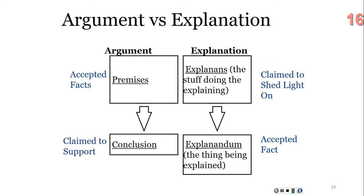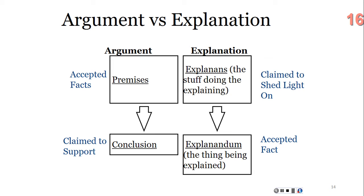With an argument you have premises that are typically accepted as fact, and the premises are claimed to support a conclusion which is not typically accepted as fact. With an explanation you have the explanans — the stuff doing the explaining — and that's claimed to shed light on an accepted fact, the explanandum, the thing being explained. An argument answers the question "why believe this?" An explanation answers the question "how does this happen? Why is this the case?" With an argument, the conclusion is typically not already accepted as fact, but the premises meant to establish it usually are. With an explanation, the thing being explained is typically already accepted as fact, but the statements that do the explaining may not be.